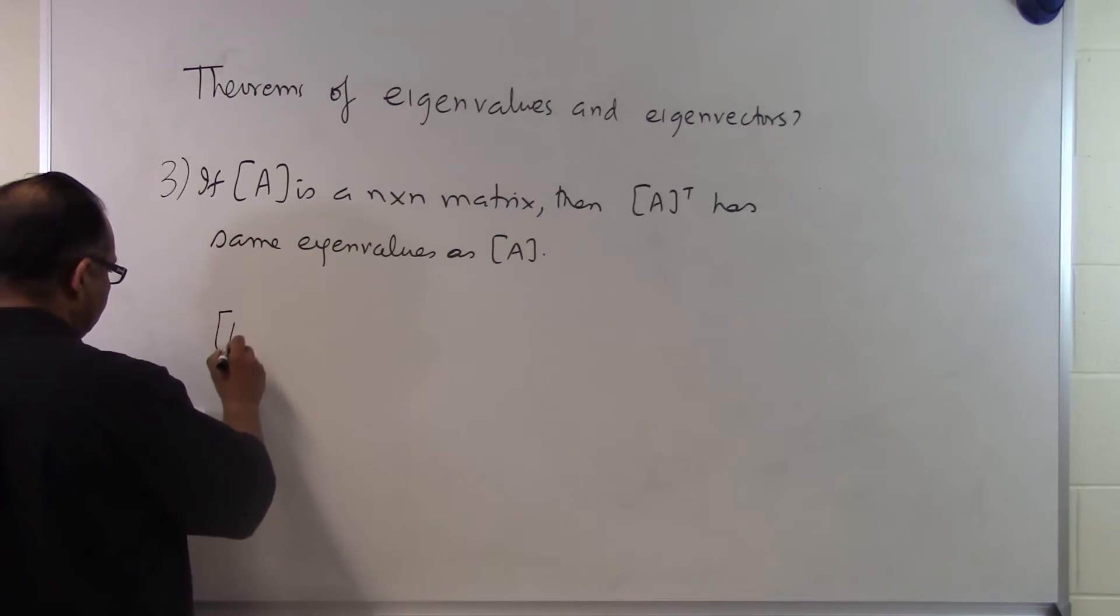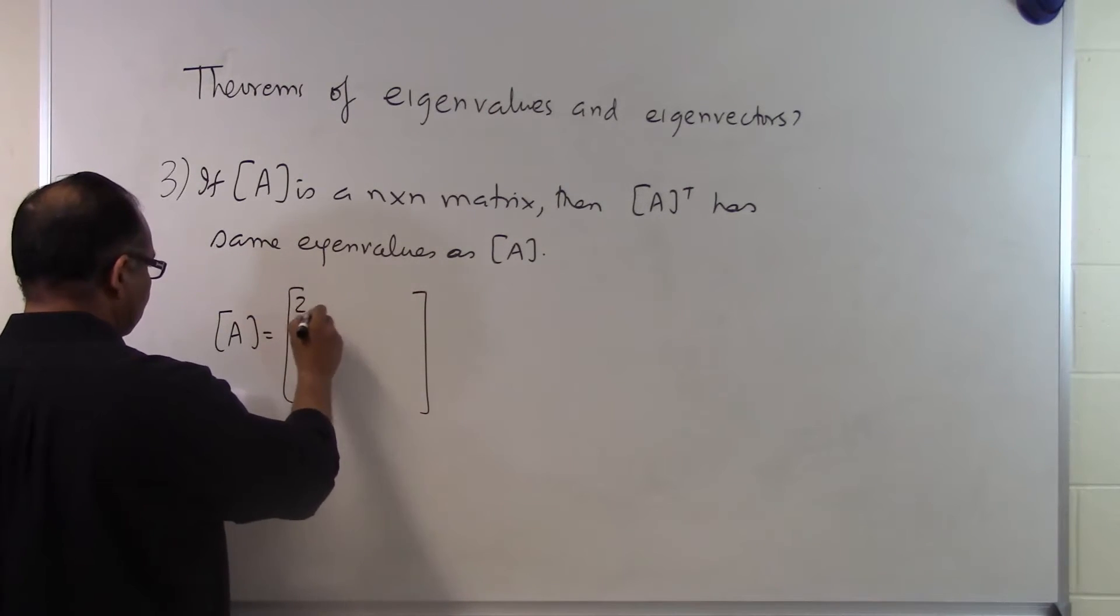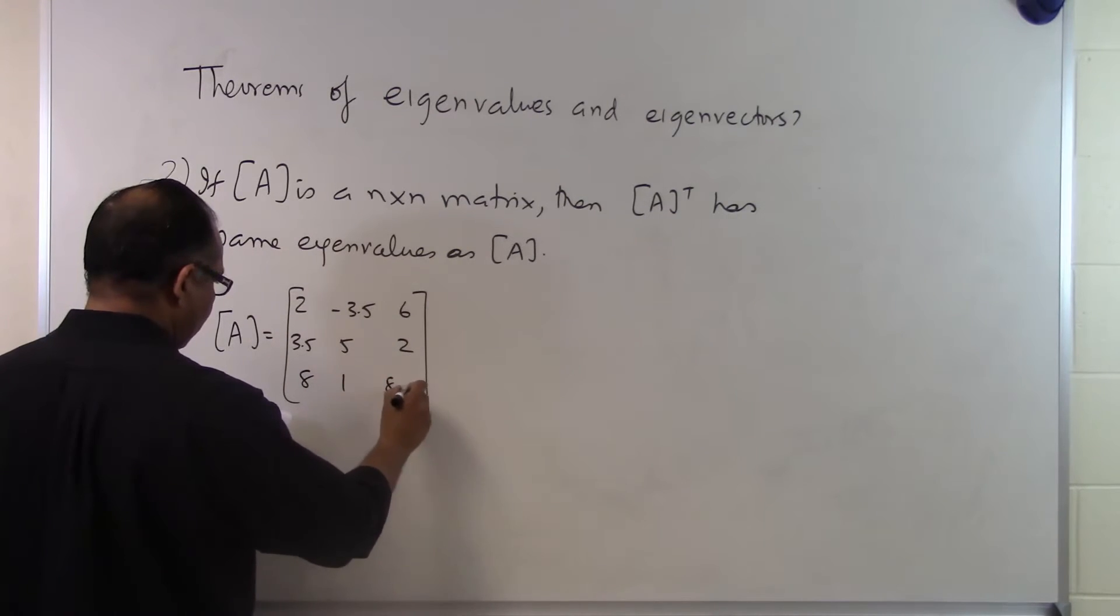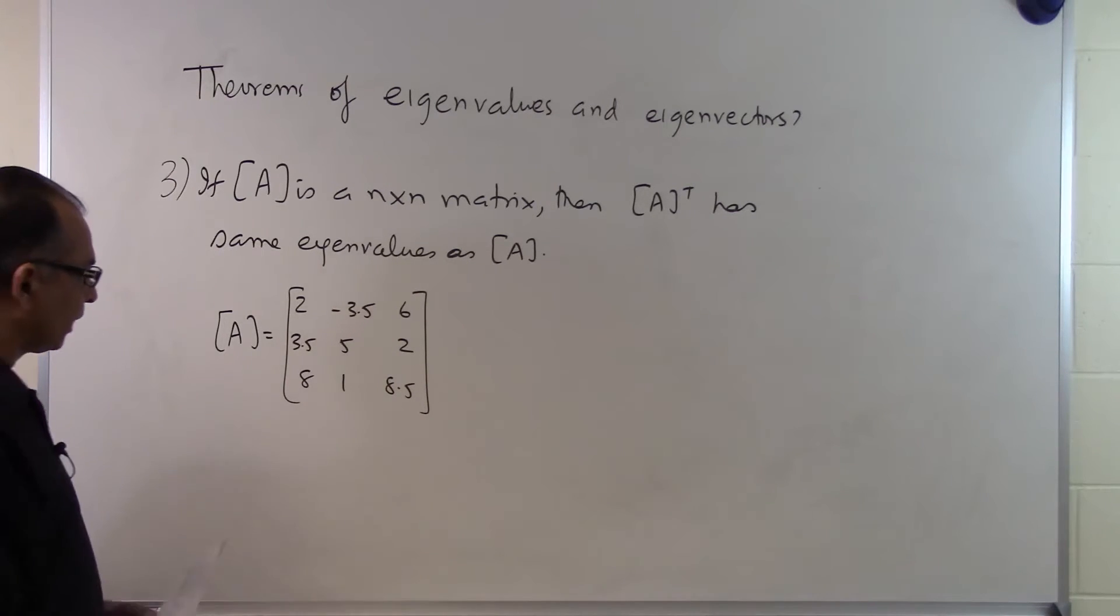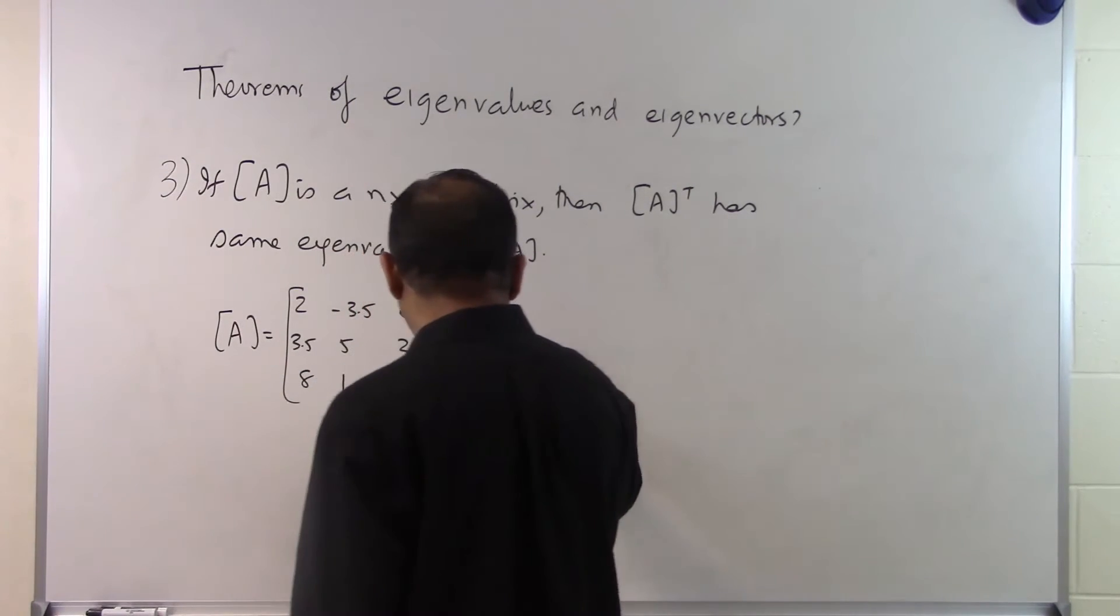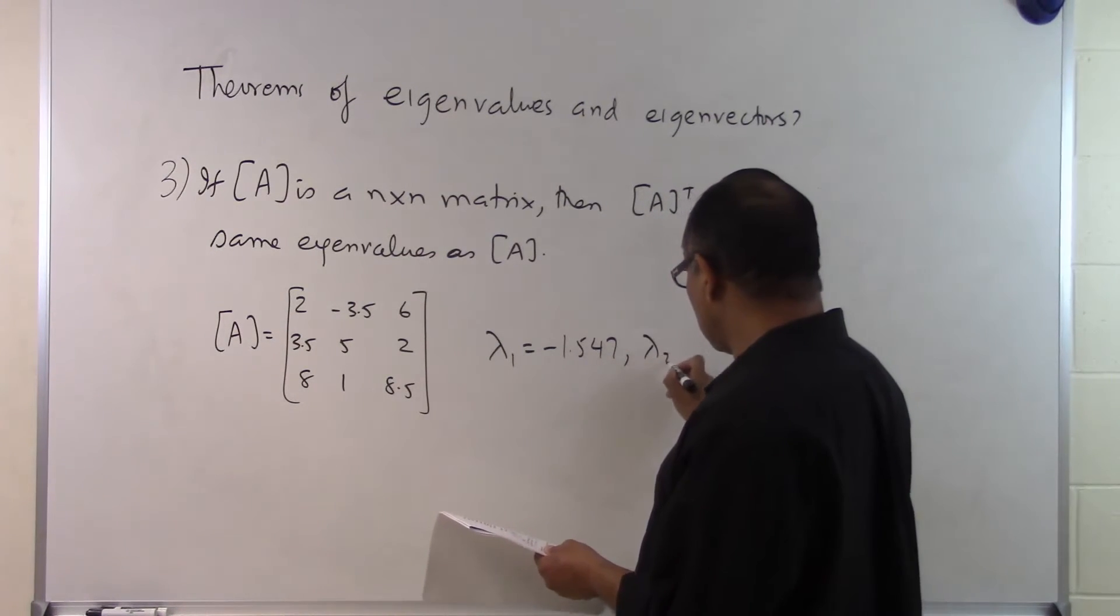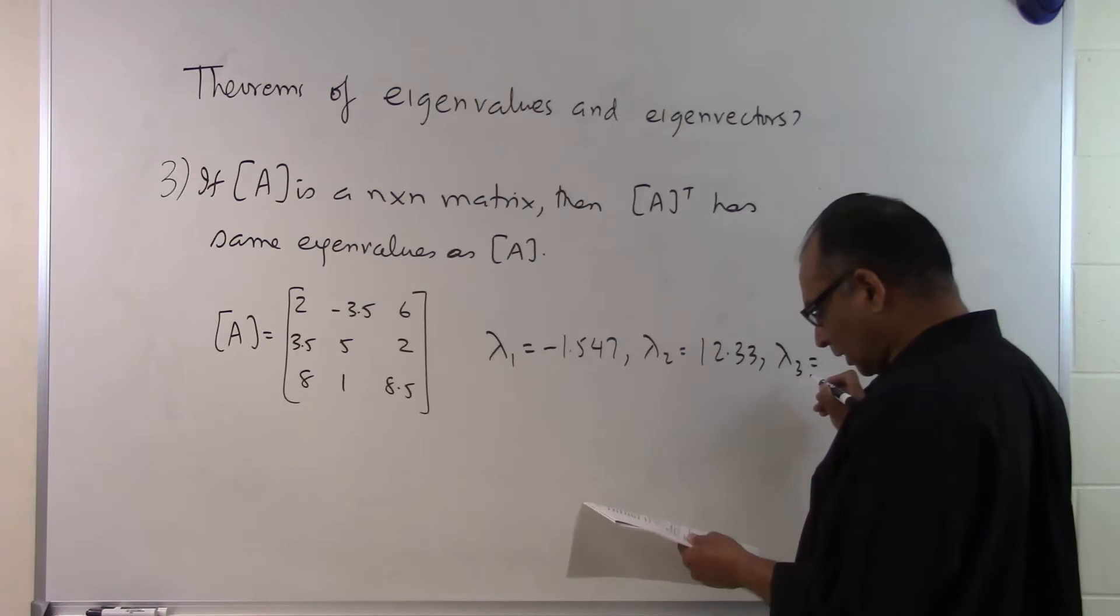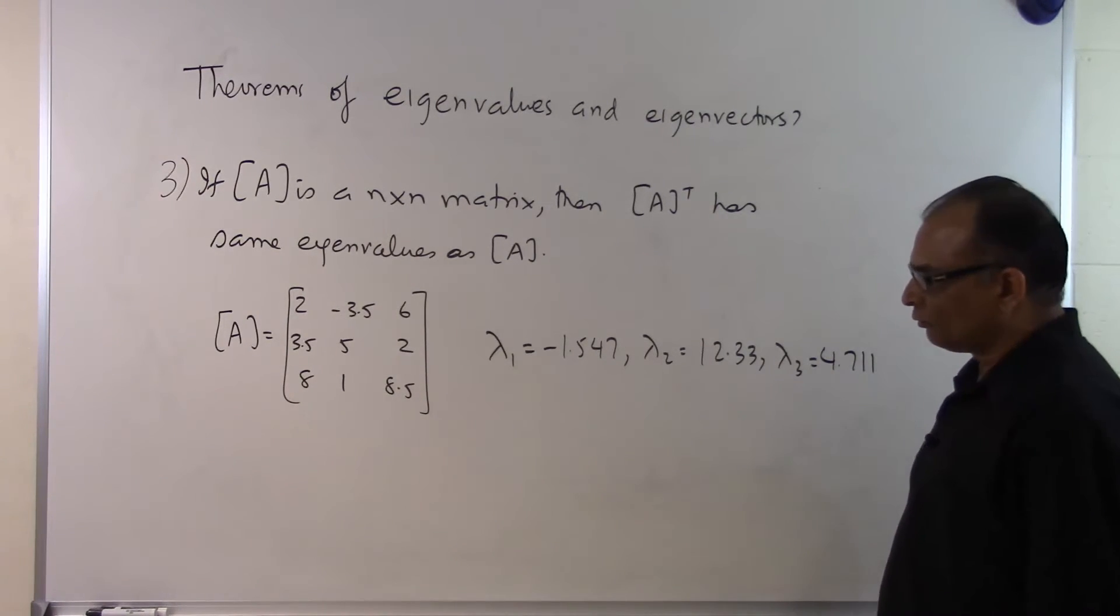Let's suppose somebody gives you a 3 by 3 matrix: 2, minus 3.5, 6, 3.5, 5, 2, 8, 1, 8.5. If you take this particular matrix right here and you find its eigenvalues by following the procedure, you will get 3 eigenvalues. You will get minus 1.547, you will get the second eigenvalue to be 12.33, and you will get the third eigenvalue to be 4.711. So these are the 3 eigenvalues that you are going to get for that particular matrix.